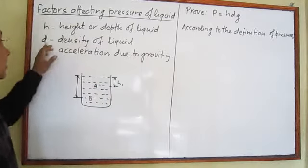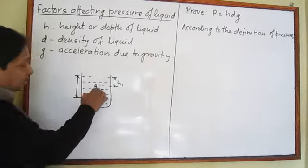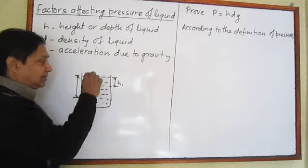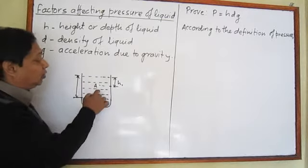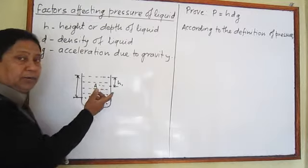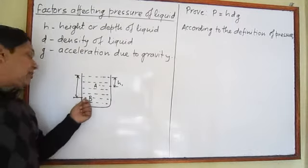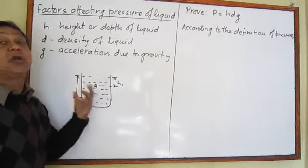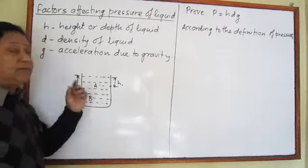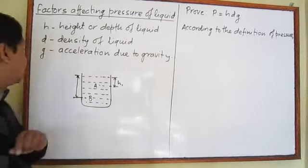In the same way, pressure also depends upon the density of the liquid. If it is water, the pressure exerted at point A will be less. If instead of water it is a salt solution, then pressure at A will be more than in water. Similarly, pressure at B will be more in the case of salt solution. More the density, more the pressure.